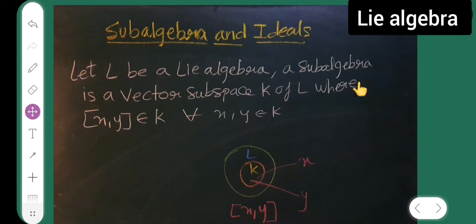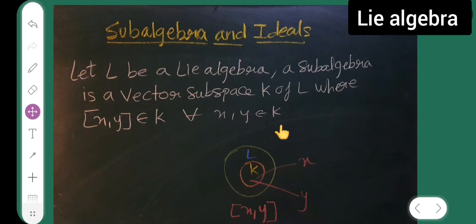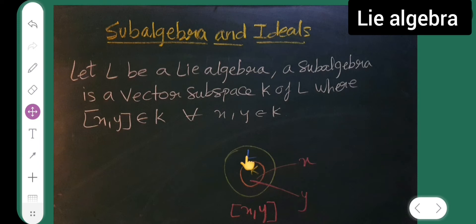Let L be a Lie algebra. A subalgebra is a vector subspace K of L where the Lie bracket of x comma y belongs to K for all x, y belonging to K. So L is the Lie algebra and K is the subalgebra of L.